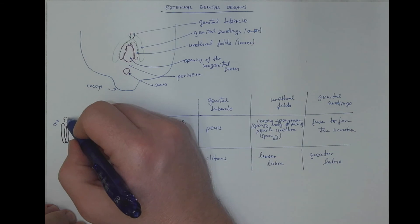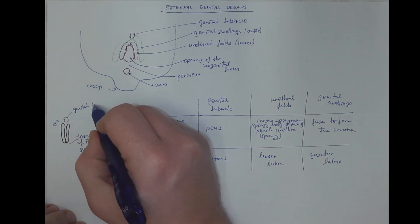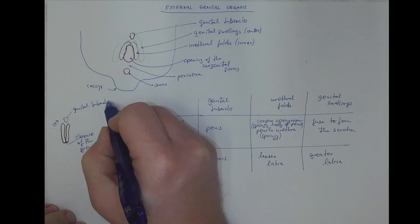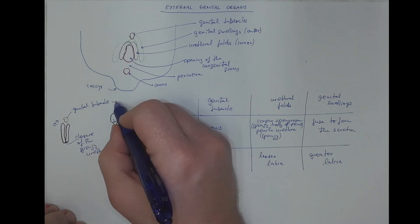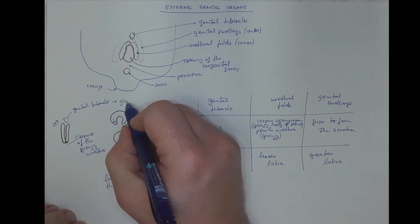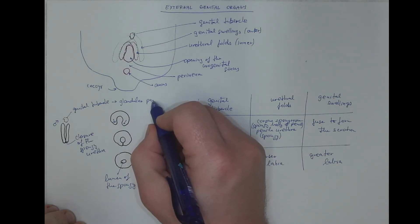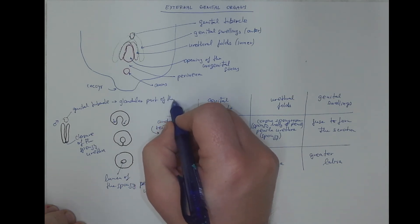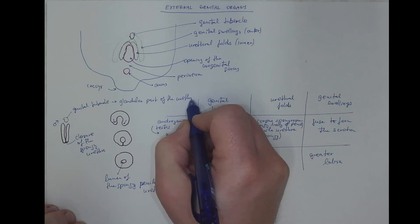The genital tubercle, the tip of it - that's where the glandular part of the urethra on the glans penis is formed.